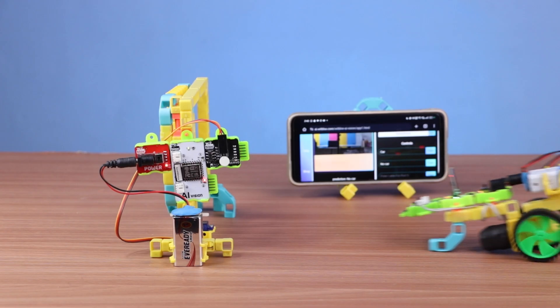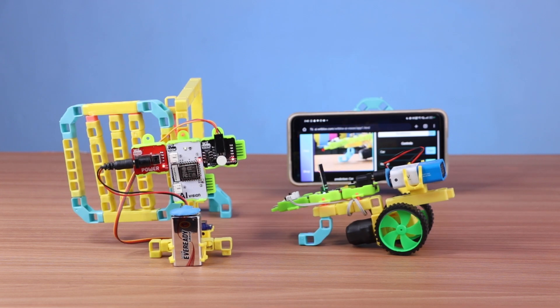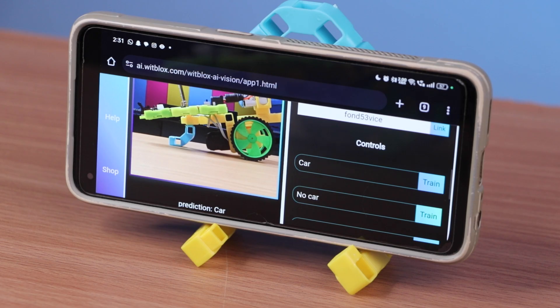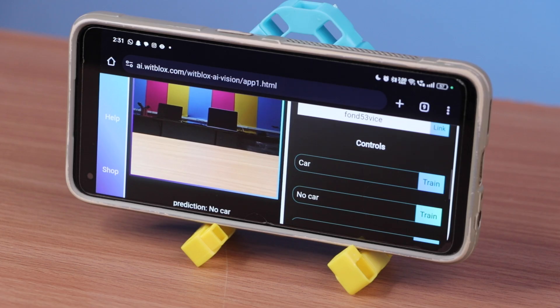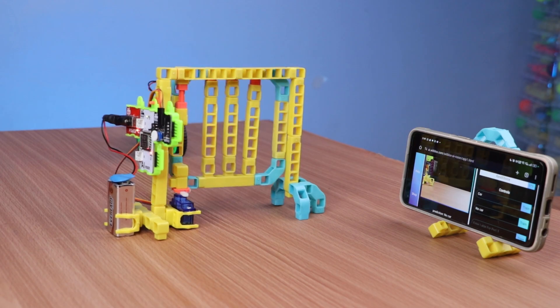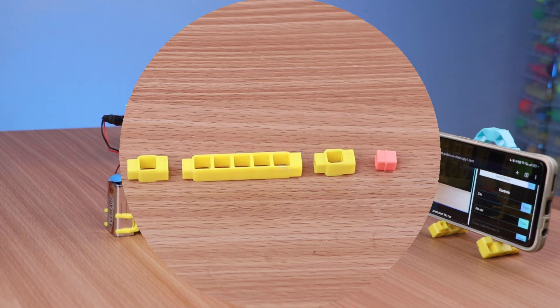So in today's experiment, we are going to build an AI based gate that will work on car recognition. We will create an AI model that can recognize a car from the background and a mechanism that will operate the gates based on the signal. Let's get started.